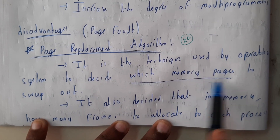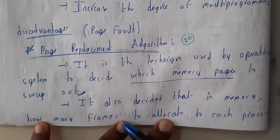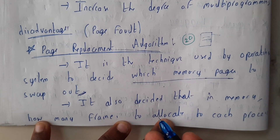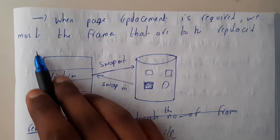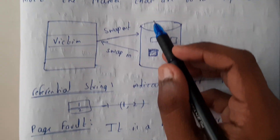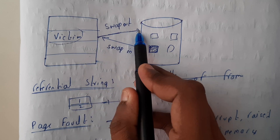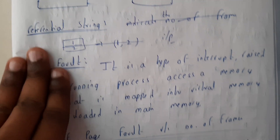Basically, page replacement algorithm is a technique used by the operating system to decide which pages to be swapped out. It also decides how many frames are to be allocated in memory — whether three frames, five frames, or ten frames. When page replacement is required, we need to be careful and select a particular victim to swap out and replace with some other page.